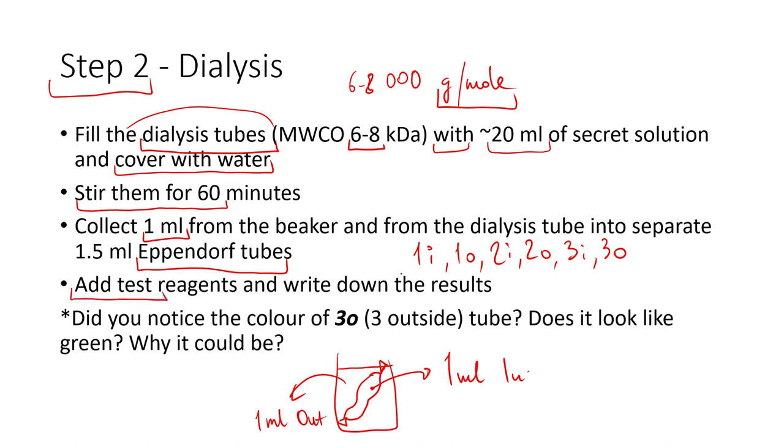After adding the test reagents, you write down the results and make conclusions for the whole lab. In the results video, you'll see the Eppendorfs, and you'll have the chance to see some color change in the 3 outside. Here's the question: Do you see this difference, and why could it be? Why is there a difference?